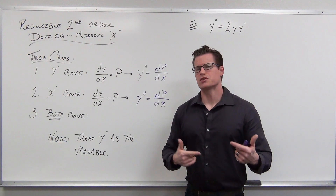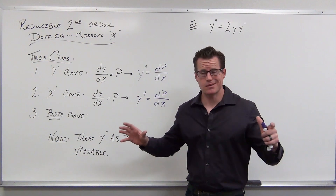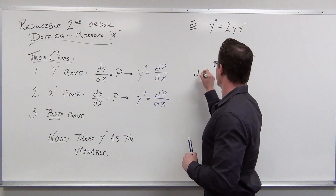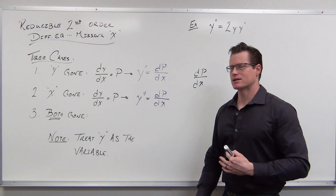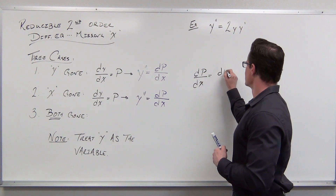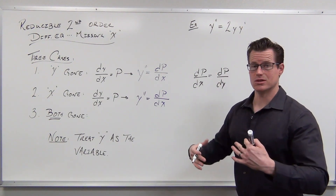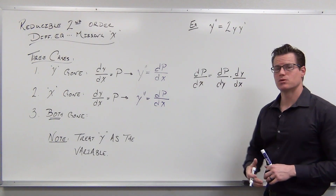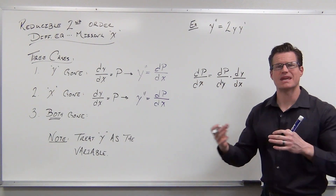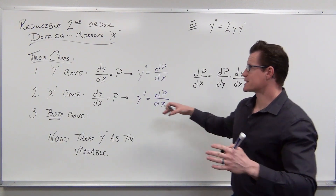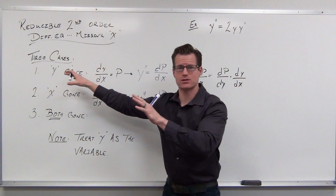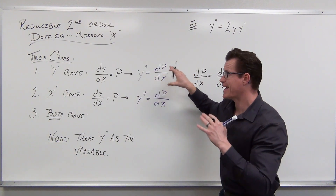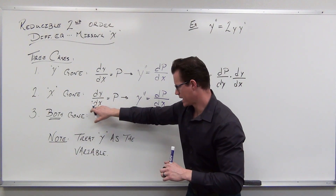So we use the chain rule. The chain rule says if dp/dx is hard to find, we can write it as dp/dy times dy/dx. If y is gone we only have x's and dy/dx is p, no problem. But if x is gone, dy/dx is p, and y double prime is dp/dx — that's a problem because we have no x's. So we use that chain rule instead.